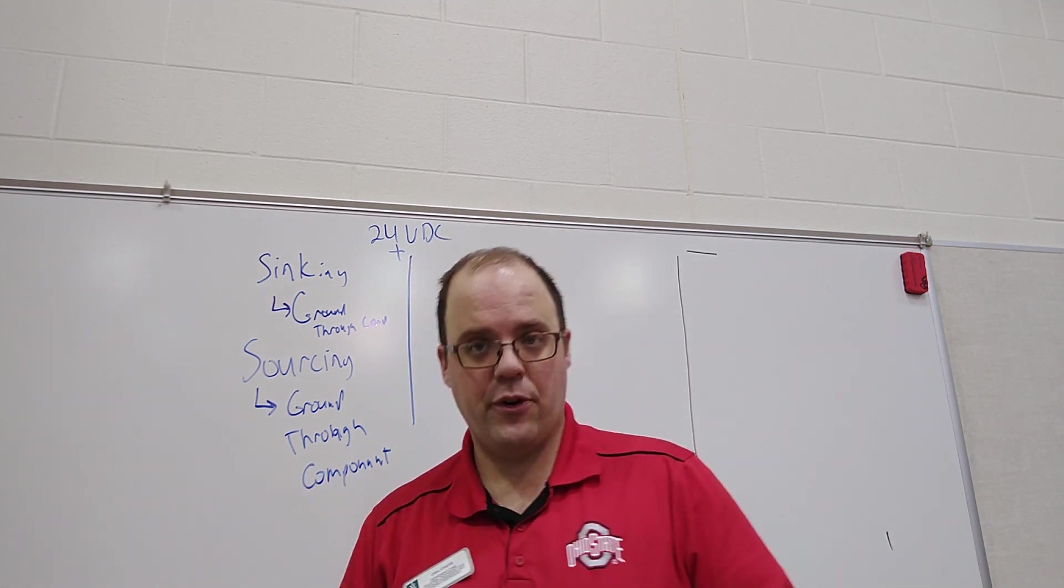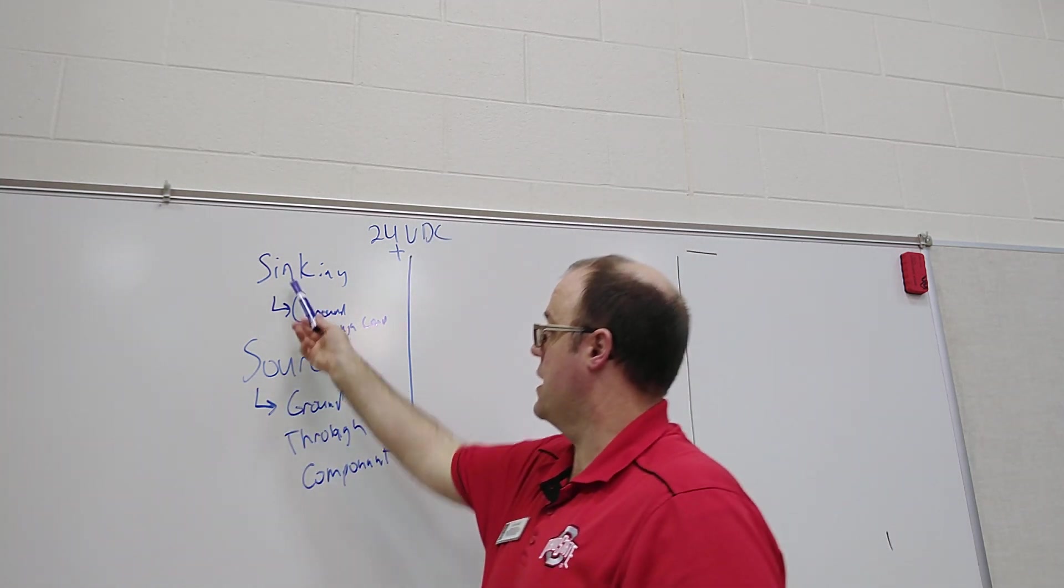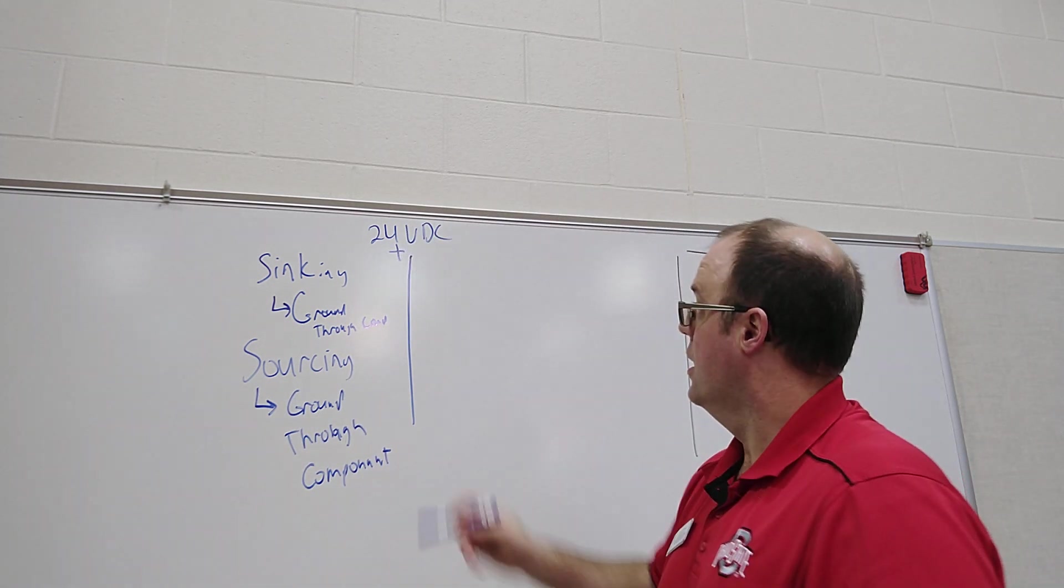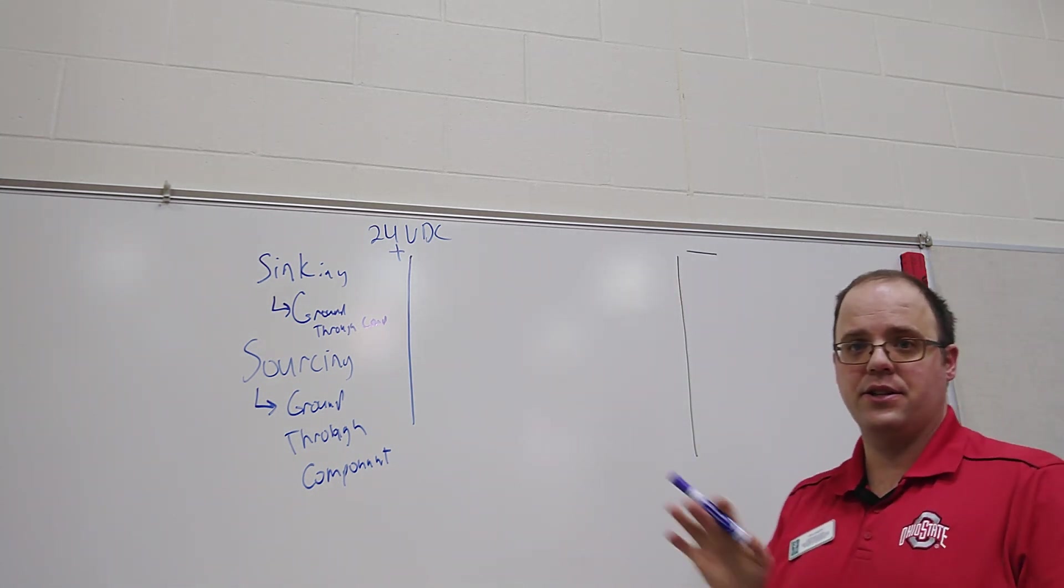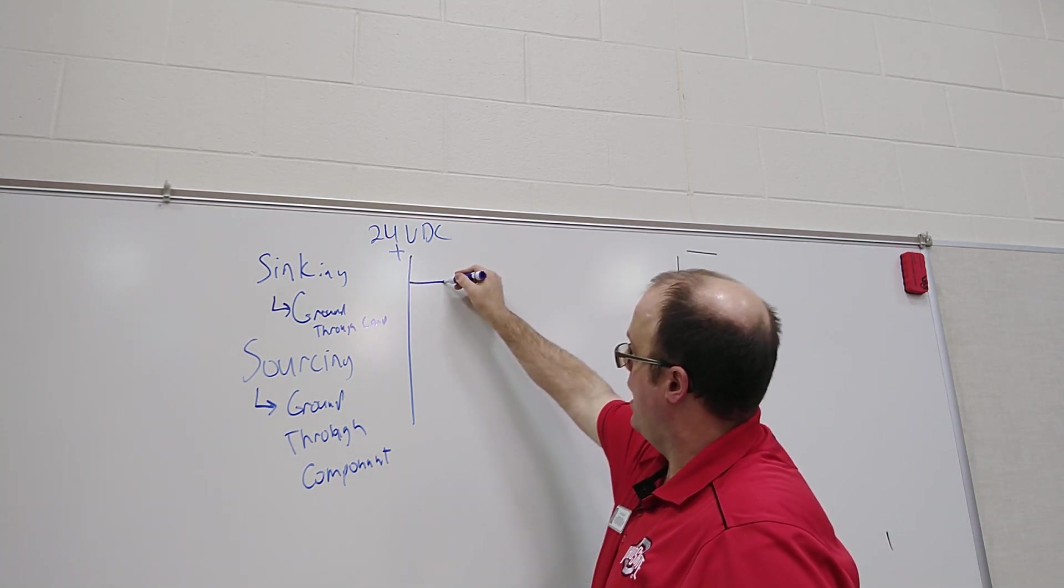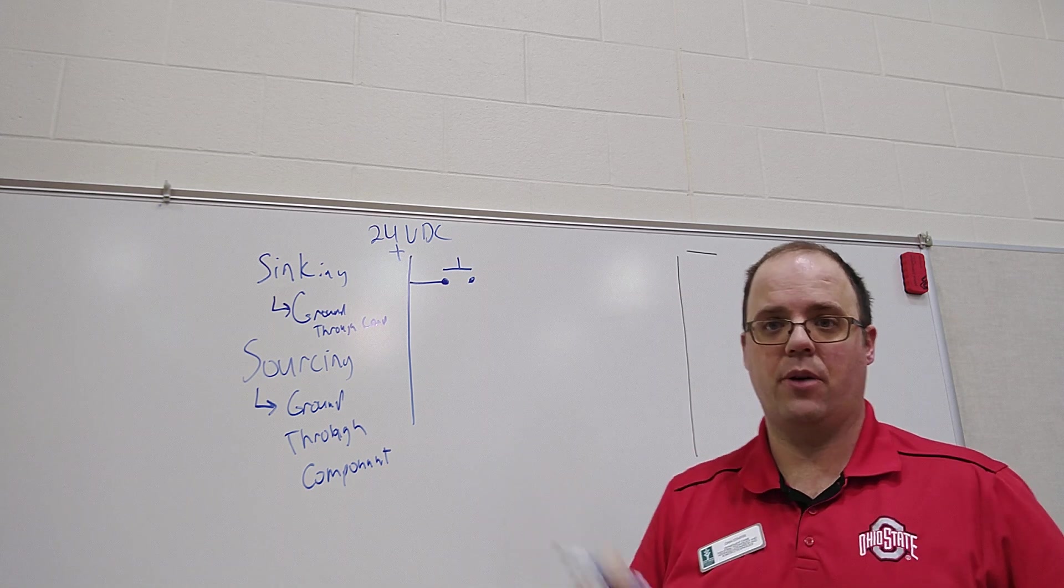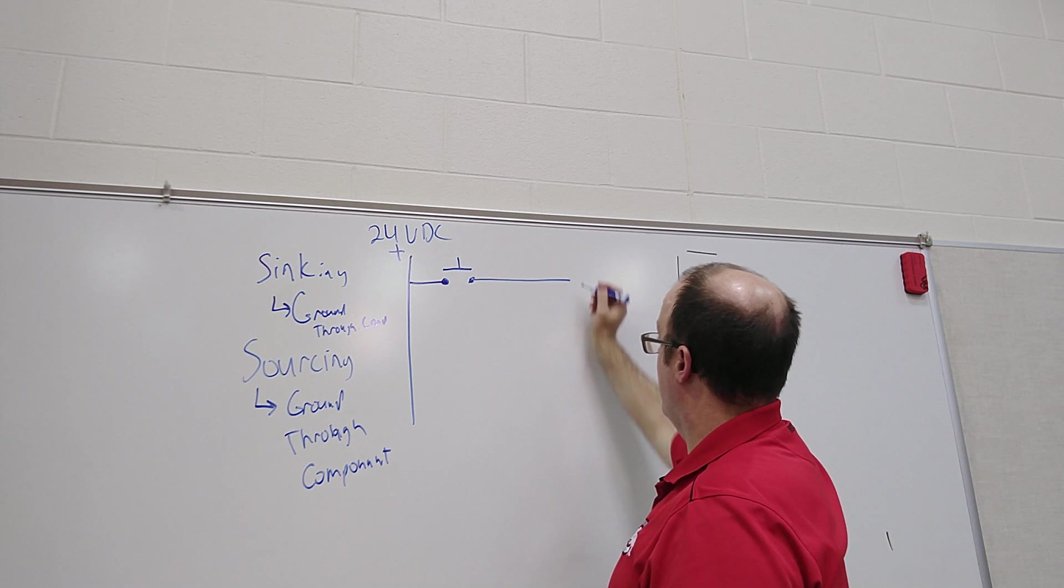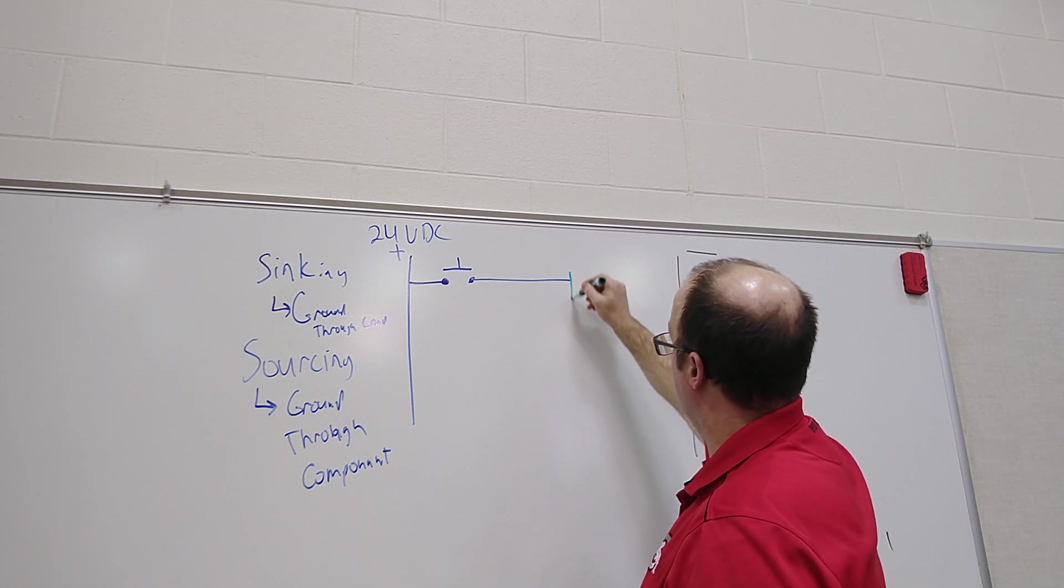Every input card or output card for that matter will say sinking or sourcing. Well what does that look like? So here's my positive and in black I have my negative, that way you can kind of get a sense of how the grounding works. And if I bring a wire over and let's just say this is a push button, general normally open push button. I will then wire this to my input card. Let me make it pretty. So here's my input card.